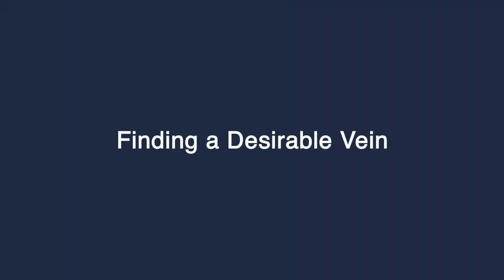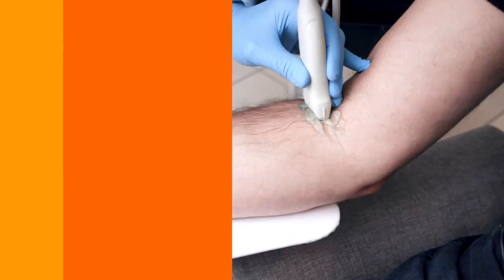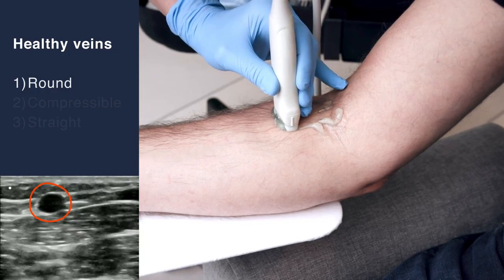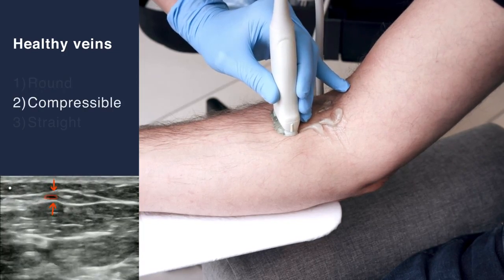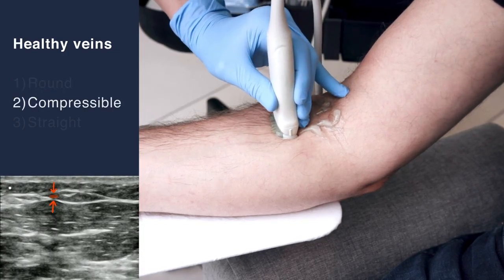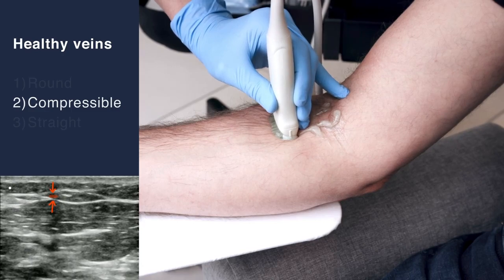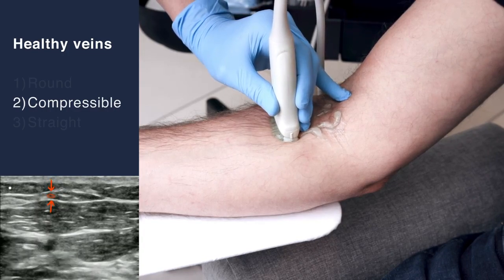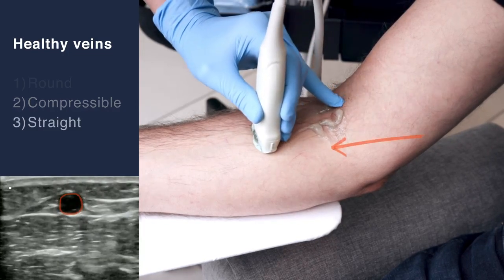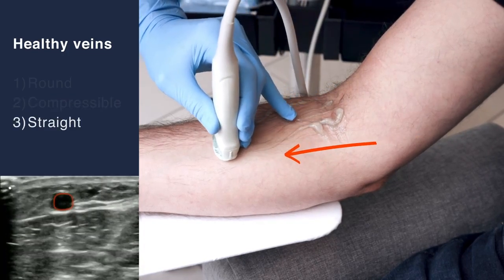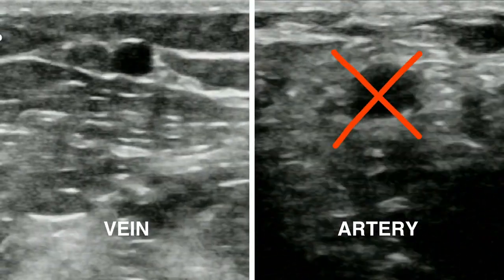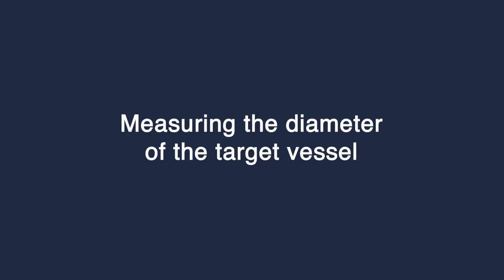Finding a desirable vein: healthy veins are round, compressible in the transverse view, and are straight in nature when traveling down the extremity. If your vessel is pulsating, it is likely an artery, not a vein. Move on to another vessel, measuring the diameter of the target vessel.